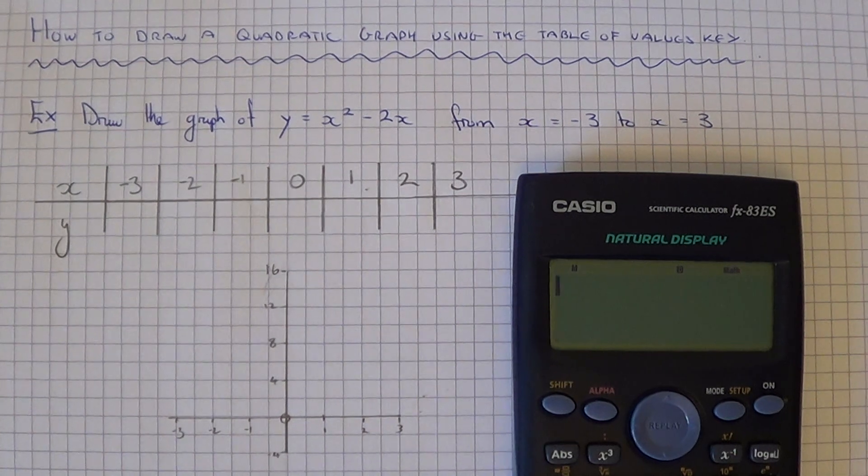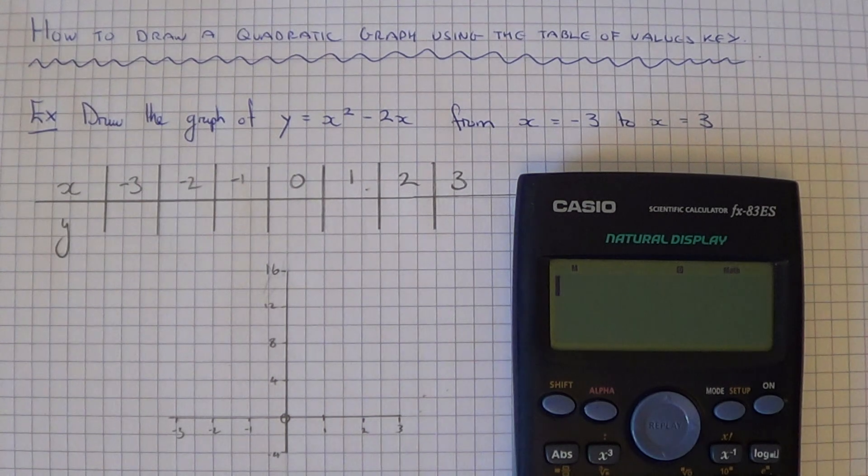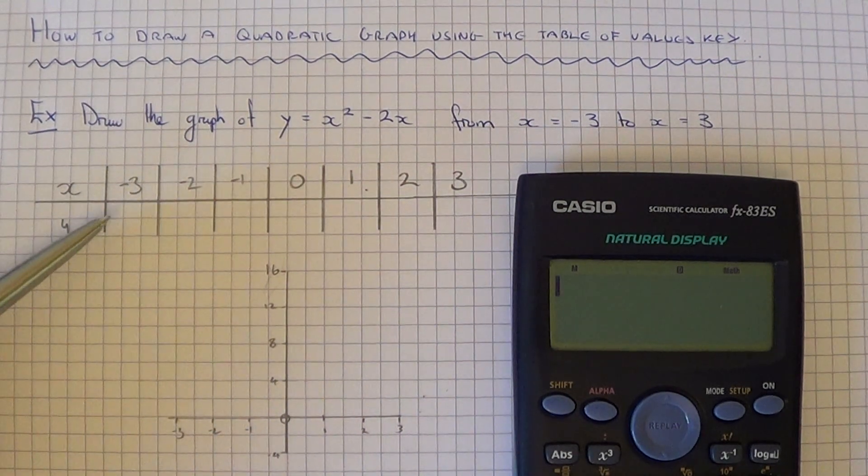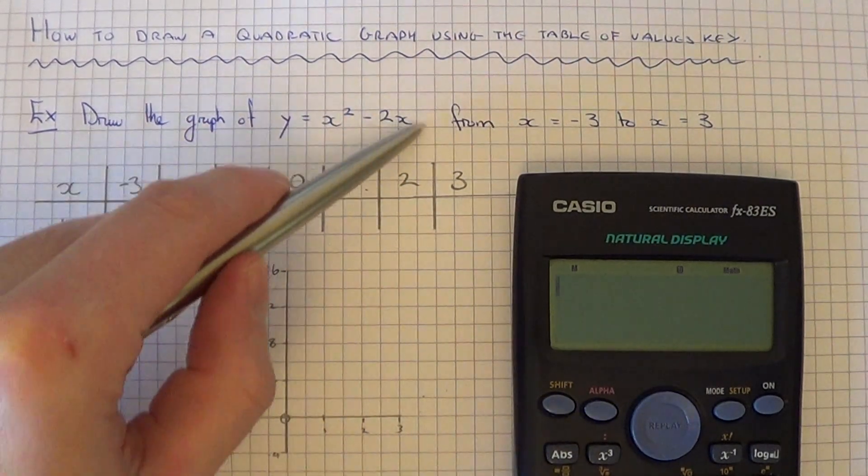Let's have a look at the example. We've got to draw the graph of y equals x squared minus 2x from x equals minus 3 to x equals 3. As you can see, I've already drawn out the table and we just need to work out the y coordinates from this formula.